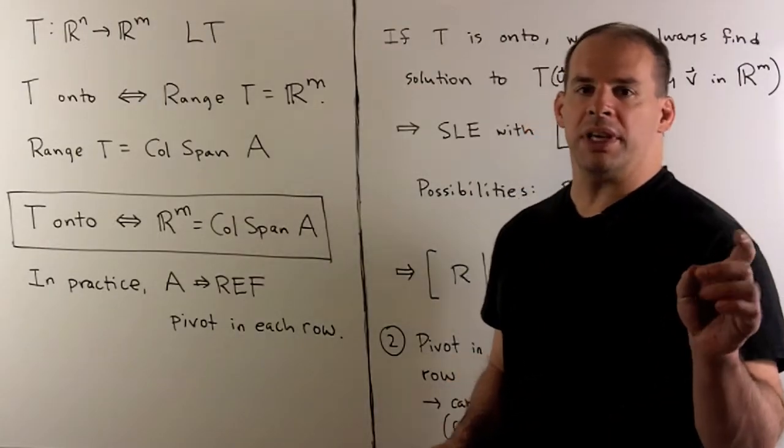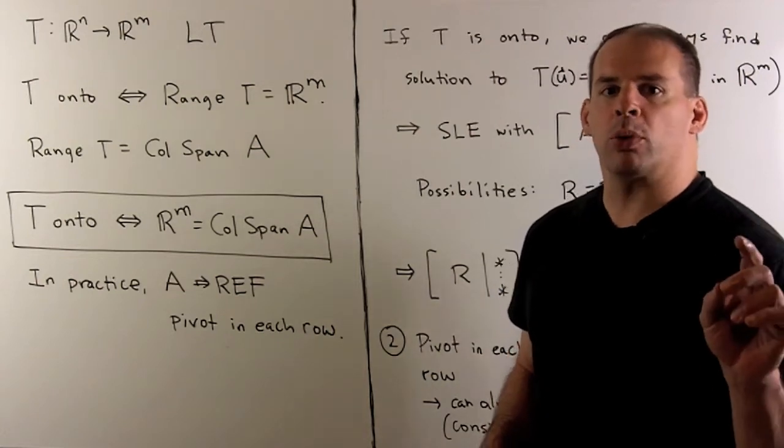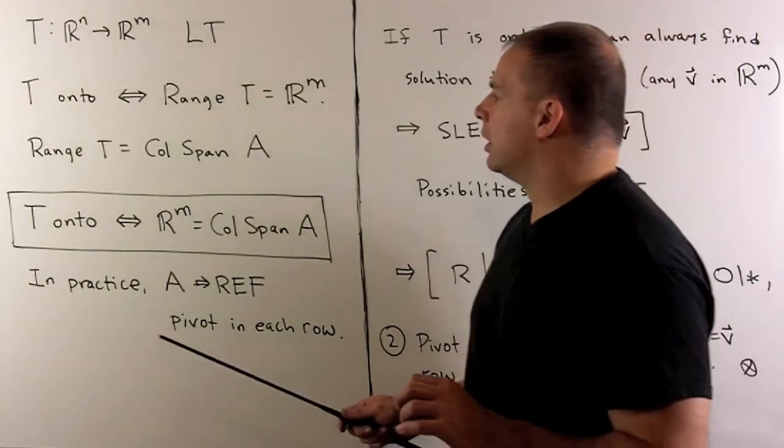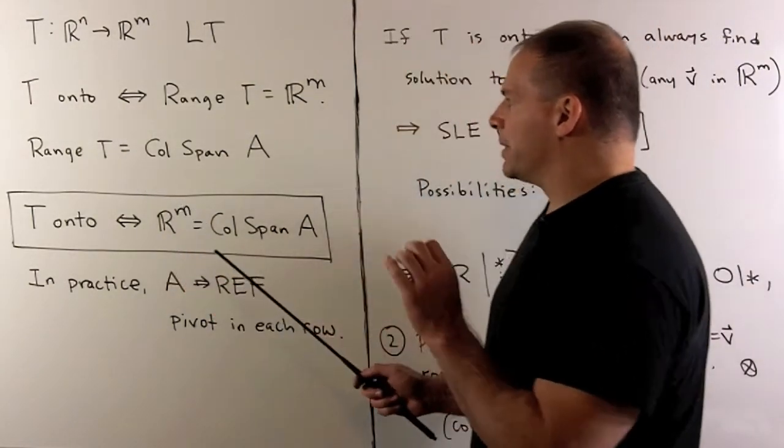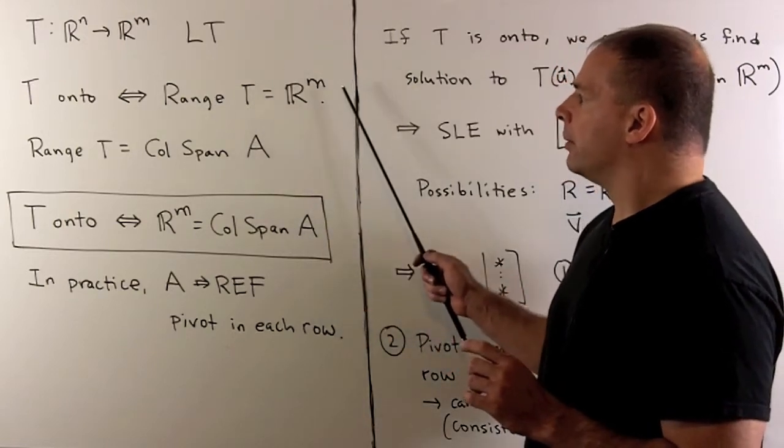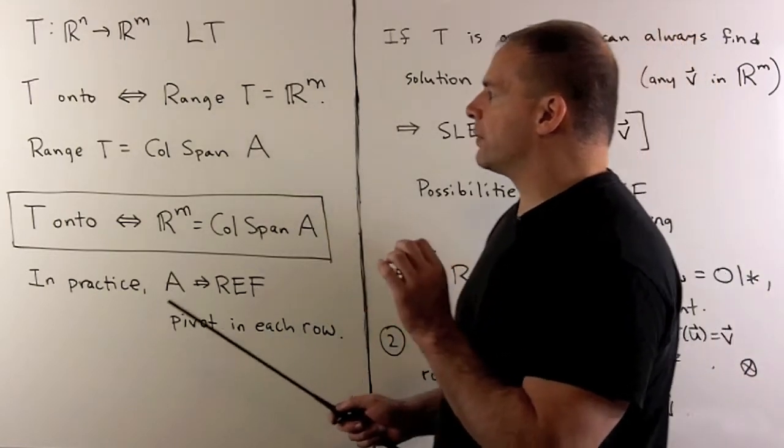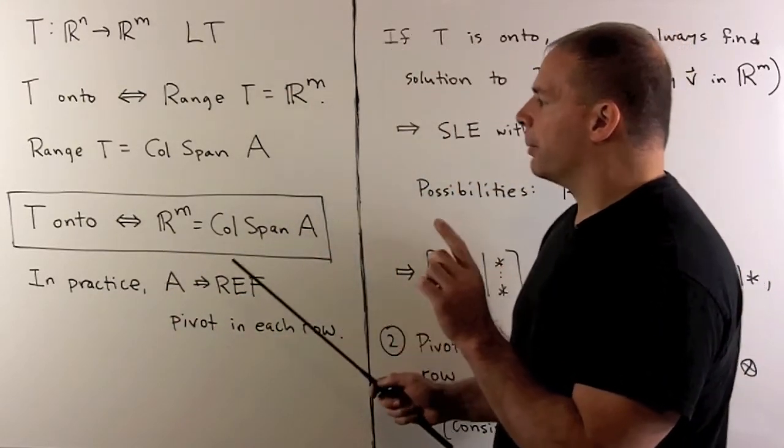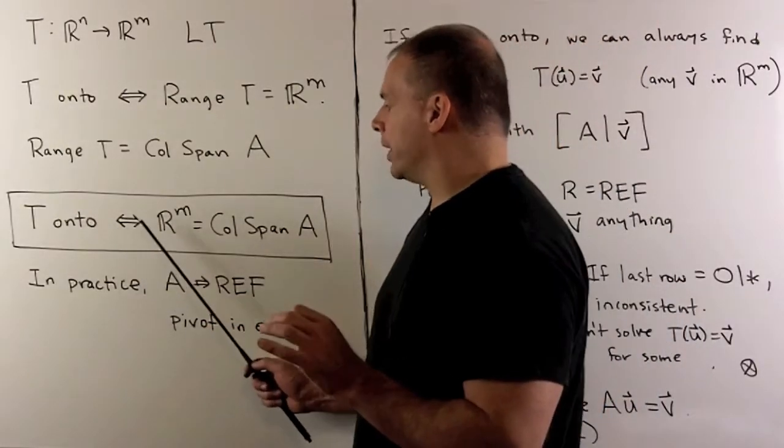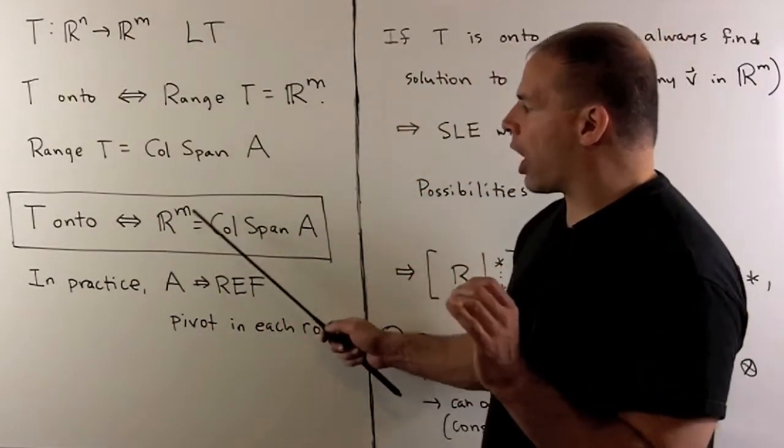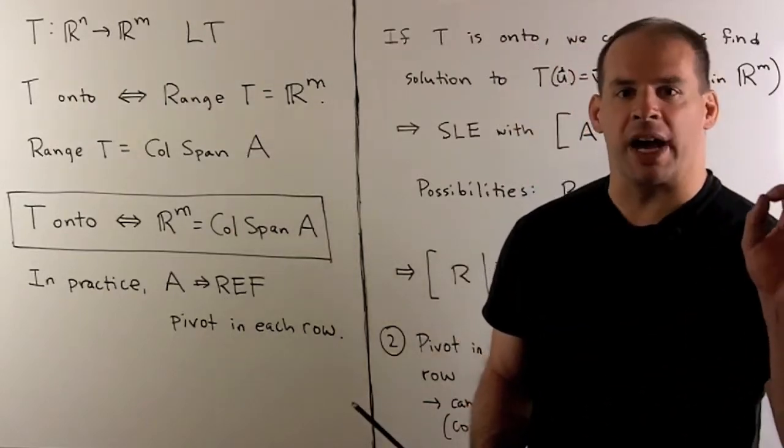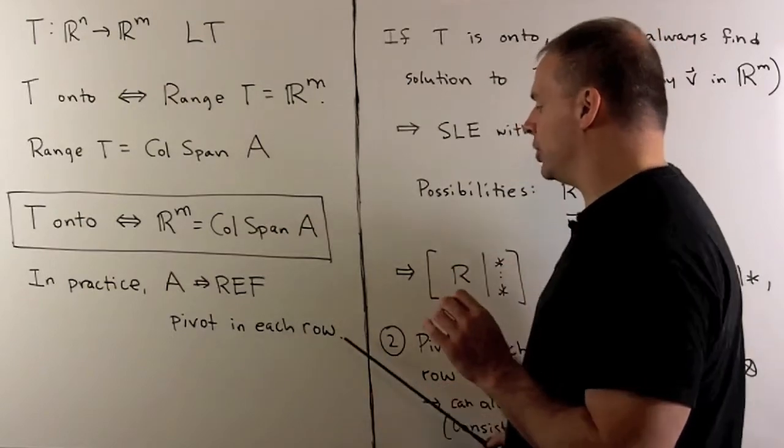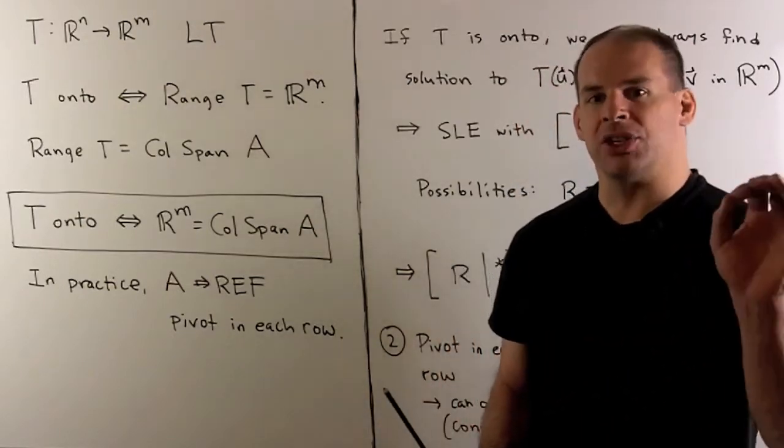Now, when t is a linear transformation, we have a straightforward rule for onto as we had when we were talking about one-to-one. So, t is onto, that's the same as saying that the range of t is equal to Rm. But since we have a linear transformation, we know that the range of t is equal to the column span of our A matrix. So, t is onto if and only if the column span of the A matrix is all of Rm. In practice, we check that by putting A into row echelon form and then checking that there's a pivot in each row. So if so, then t is onto.